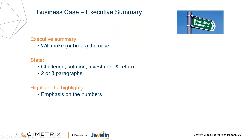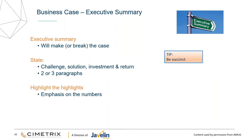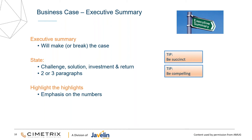Now we get into the actual presentation itself. The executive summary is really going to make or break your case, and it needs to be short — challenge the solution in two or three paragraphs and emphasize those numbers. Be succinct; it needs to be short and sweet. Chances are that's maybe all the CFO or CEO reads — they will typically read your executive summary and maybe skim through some of the numbers at the end. Be compelling, excite them, get them interested in what you're trying to purchase. Write it last because you need to have the data first.